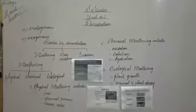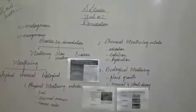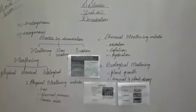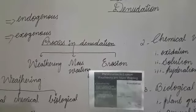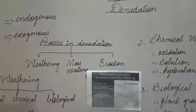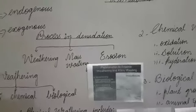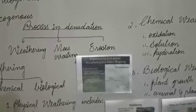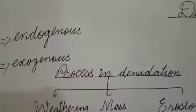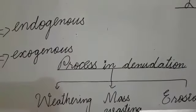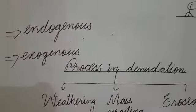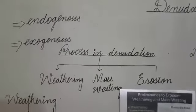What is denudation? All of you know that our earth is constantly changing through some natural processes which happen inside the earth as well as outside the earth. There are mainly two processes: one is called endogenous and the other one is called exogenous. Endogenous is a process that happens under the surface of the earth, and exogenous is the process which happens outside the earth. These are two processes of denudation from where denudation starts.